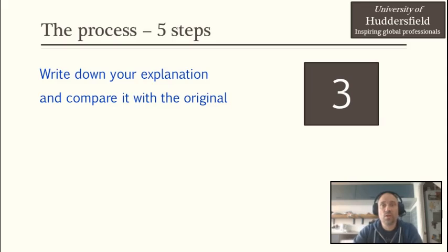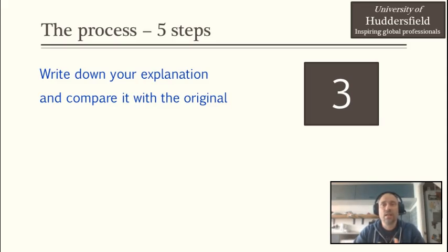The third step is very straightforward. You have to write down your explanation and then compare it with the original. You will find that at this point your explanation will still contain similar vocabulary and similar phrases to the original, but that's okay — you don't need to worry about it. You basically just want to compare if there is a lot of similarity. It is also possible that there are certain words you won't be able to replace with synonyms simply because they are the universally accepted expert terms that everybody uses in the field, and you have to leave those. But in this step you will see whether there are still structural similarities or similar vocabulary remaining.